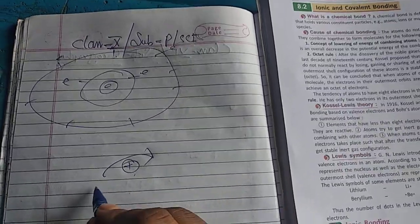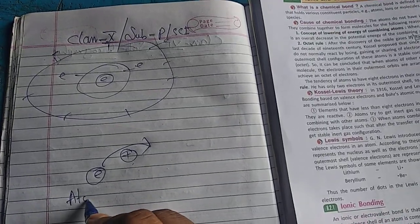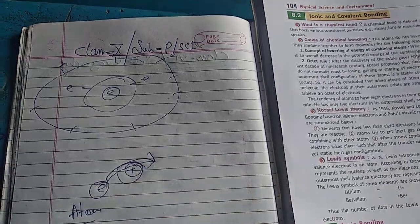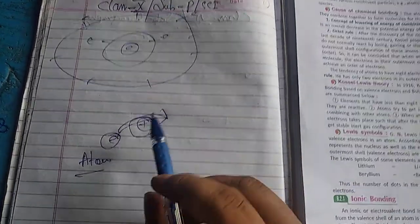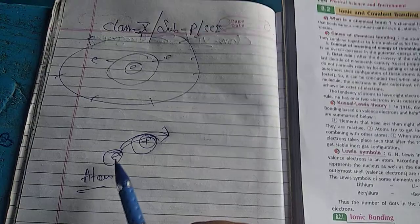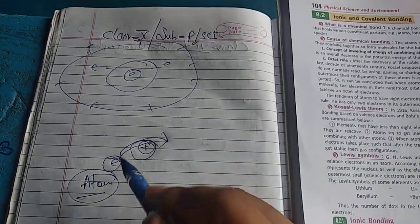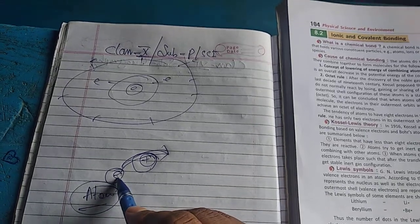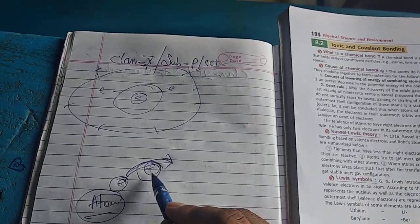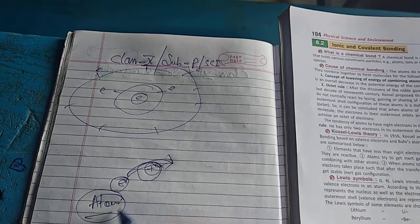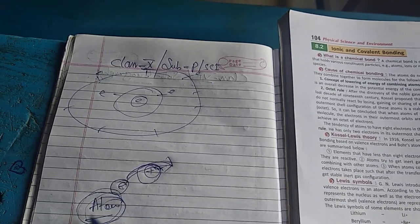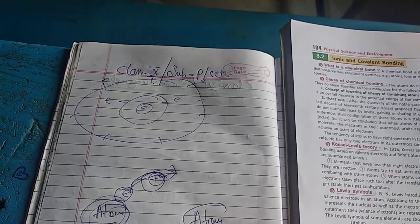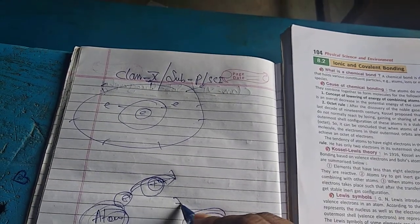If an atom gives away an electron, it will become positively charged. Positive means that if an atom loses an electron, it will be positively charged.